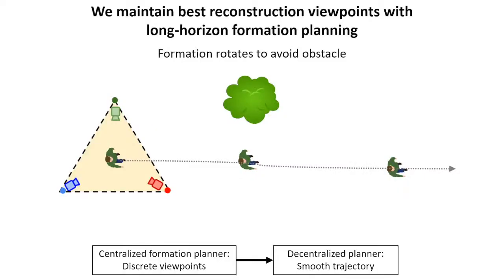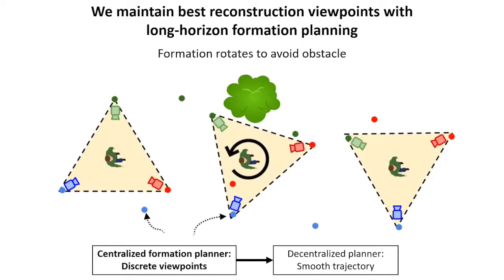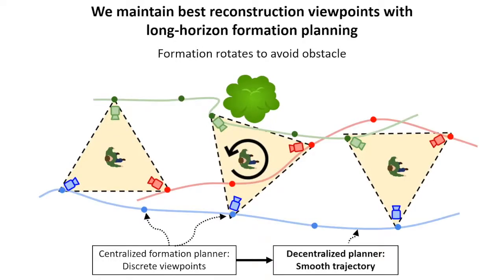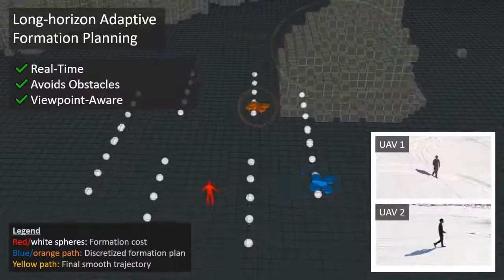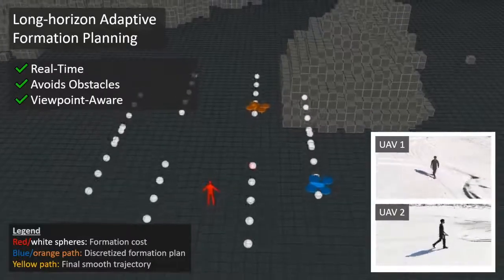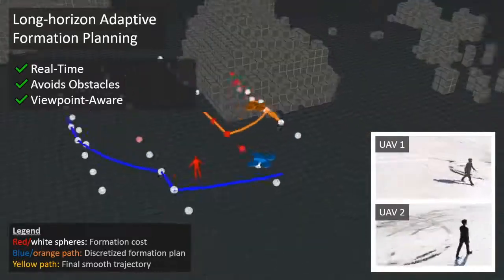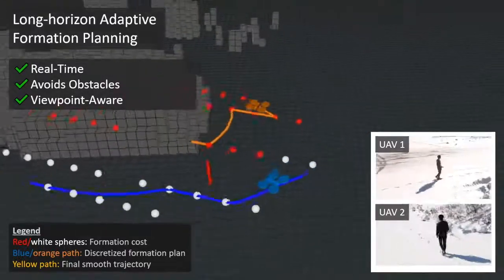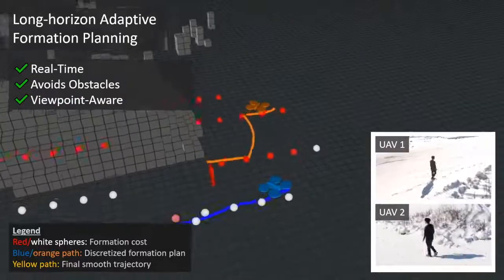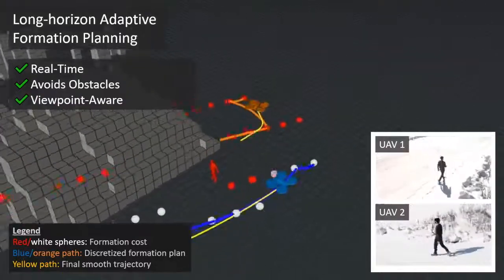To maintain the best reconstruction viewpoints, we plan discrete formation paths over a long horizon, then each drone smooths its trajectory with a decentralized planner. Here is our approach in action with two drones rotating their formation clockwise around an obstacle, keeping the target in view at a low tilt angle for best reconstruction.